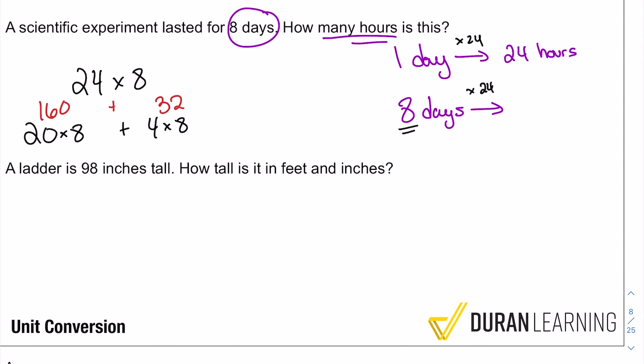And remember this over here is going on in my head, 20 times eight and four times eight. And then you bring it back together in your head to get 192. And there we go. 192 hours is eight days. That's the answer there.